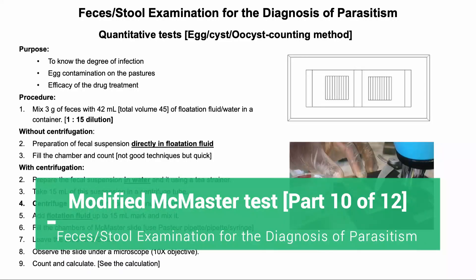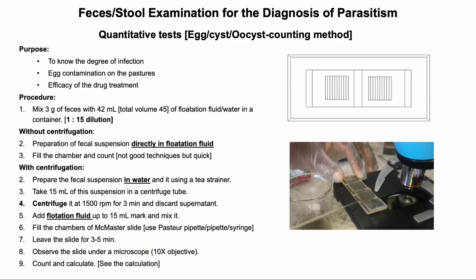In this lecture, I'm going to discuss the modified McMaster test. The purpose of quantitative tests is to count the eggs, cysts, and oocysts so that the degree or intensity of infection can be assessed. It also helps to estimate the extent of parasite egg contamination on the pasture grazed by an infected animal, and to determine the efficacy of drug treatment — for example, assessing anthelmintic resistance using the fecal egg count reduction test.